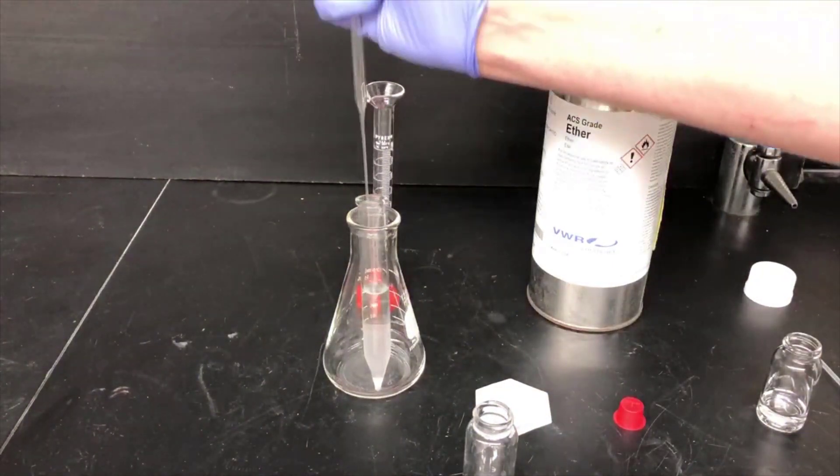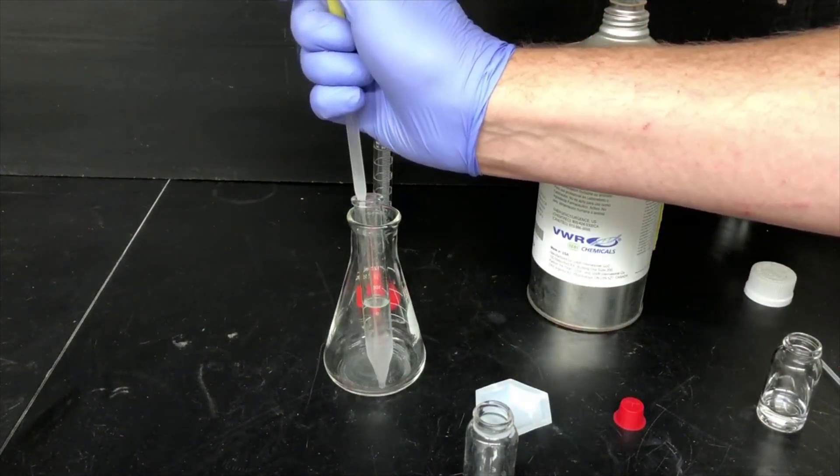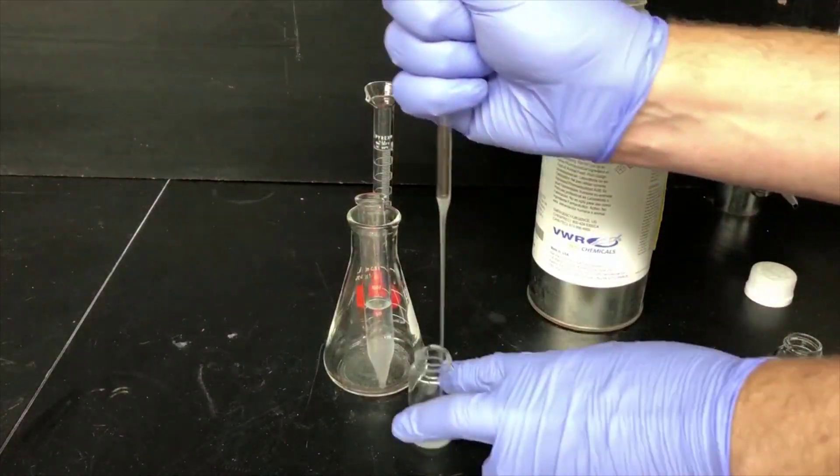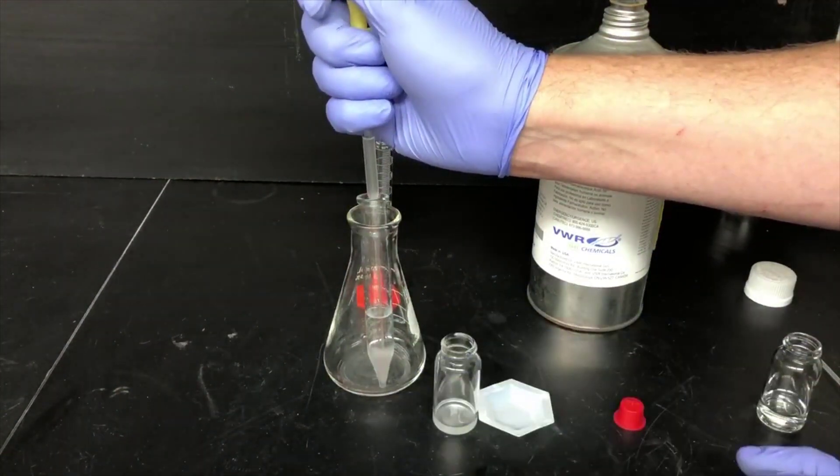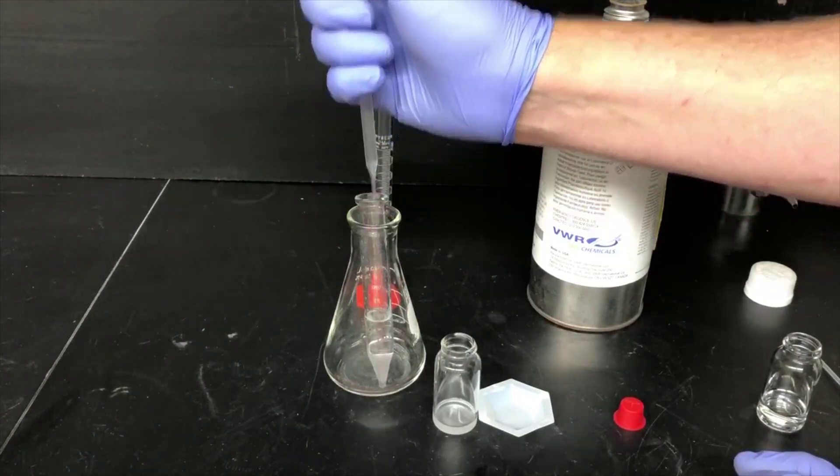I'm separating the bottom layer by putting a pipette down to the very bottom of the tip and sucking out that layer. It's always easiest with these point-bottom test tube extractions to suck out the bottom layer first, even if the top layer is the one you want.